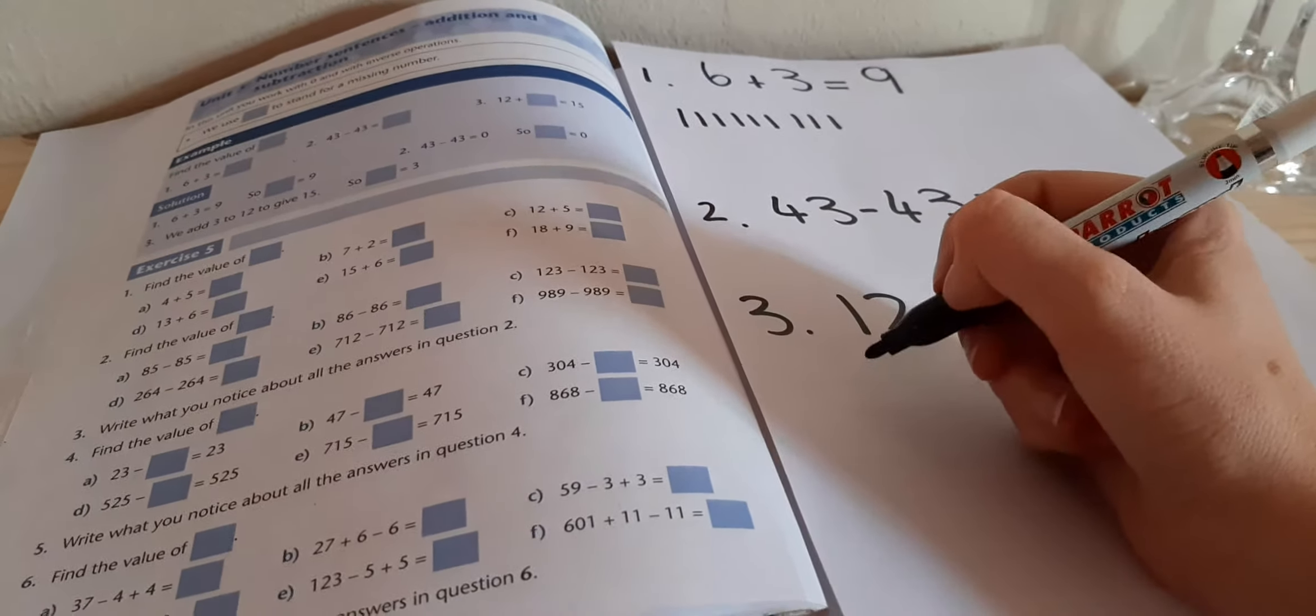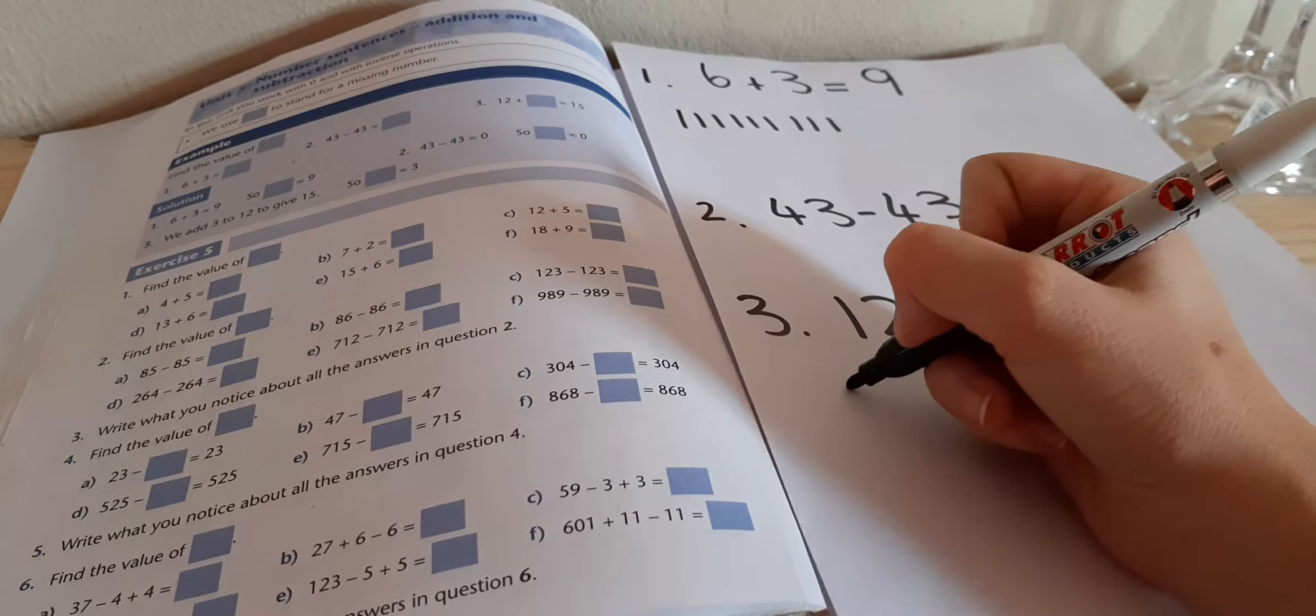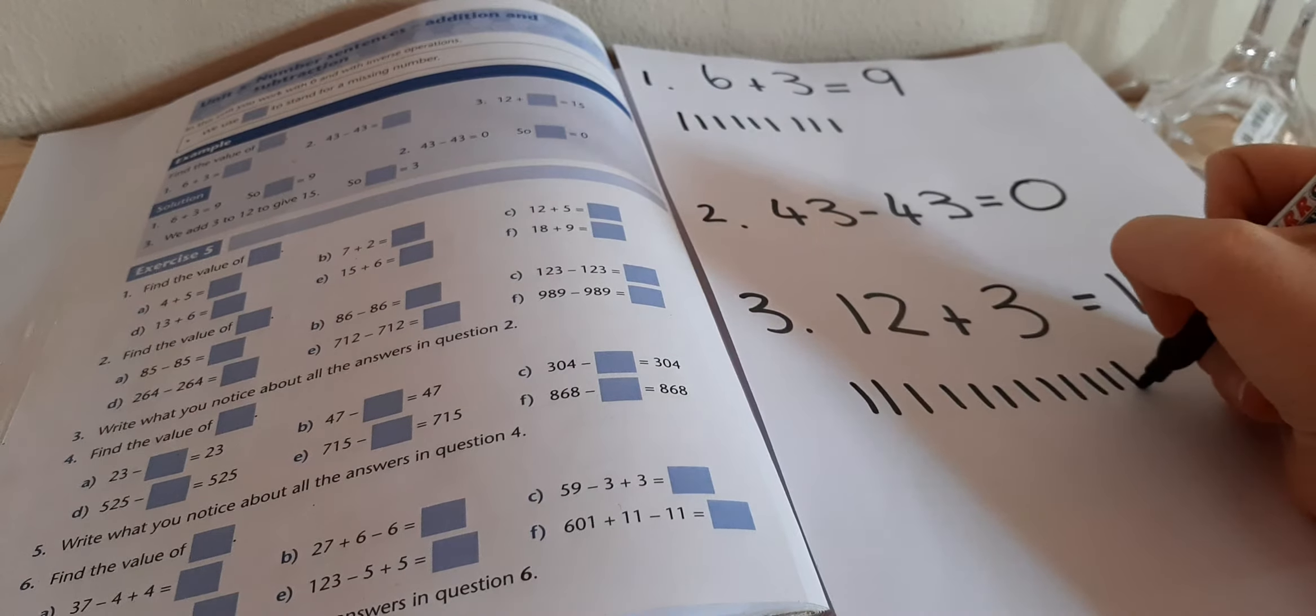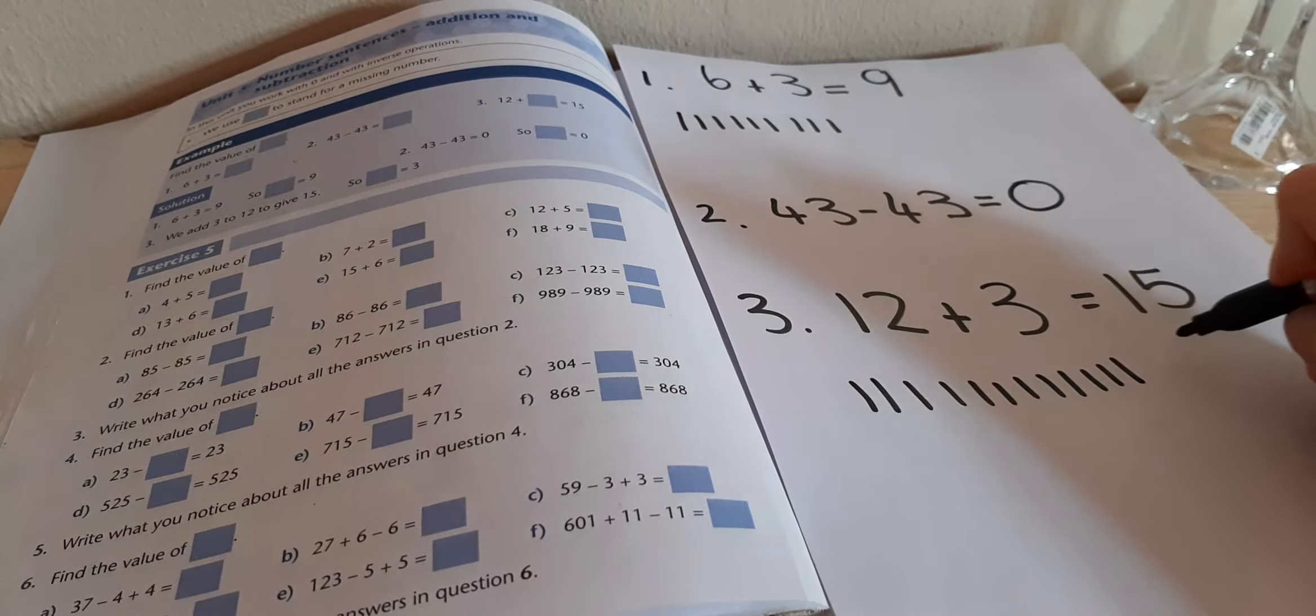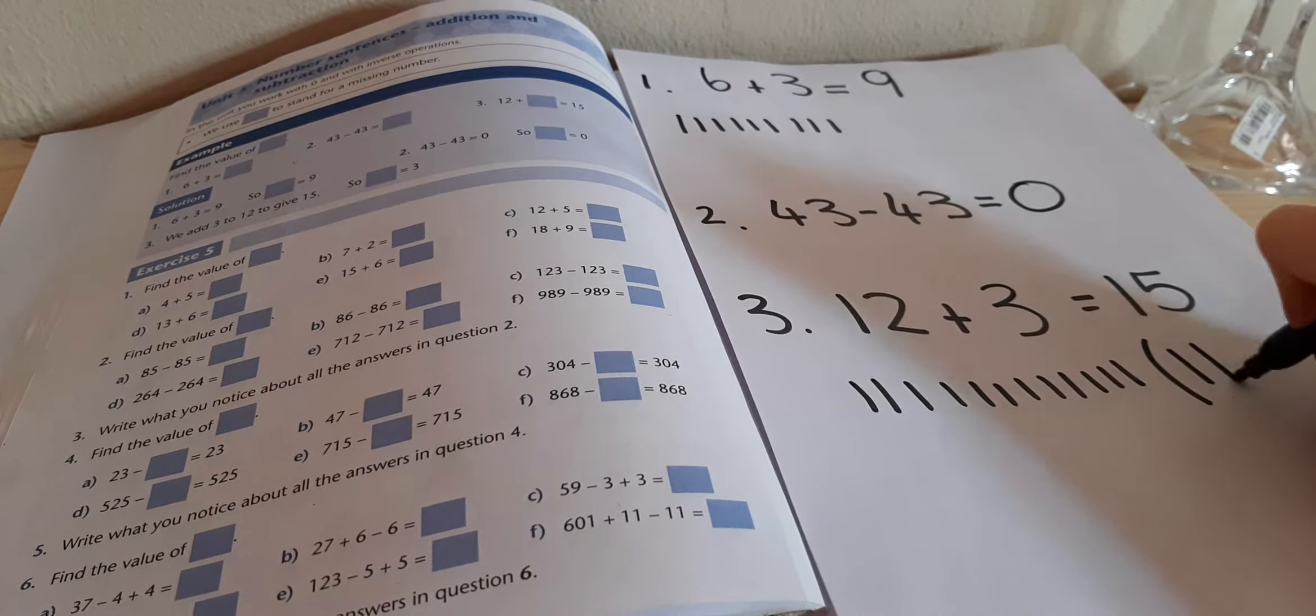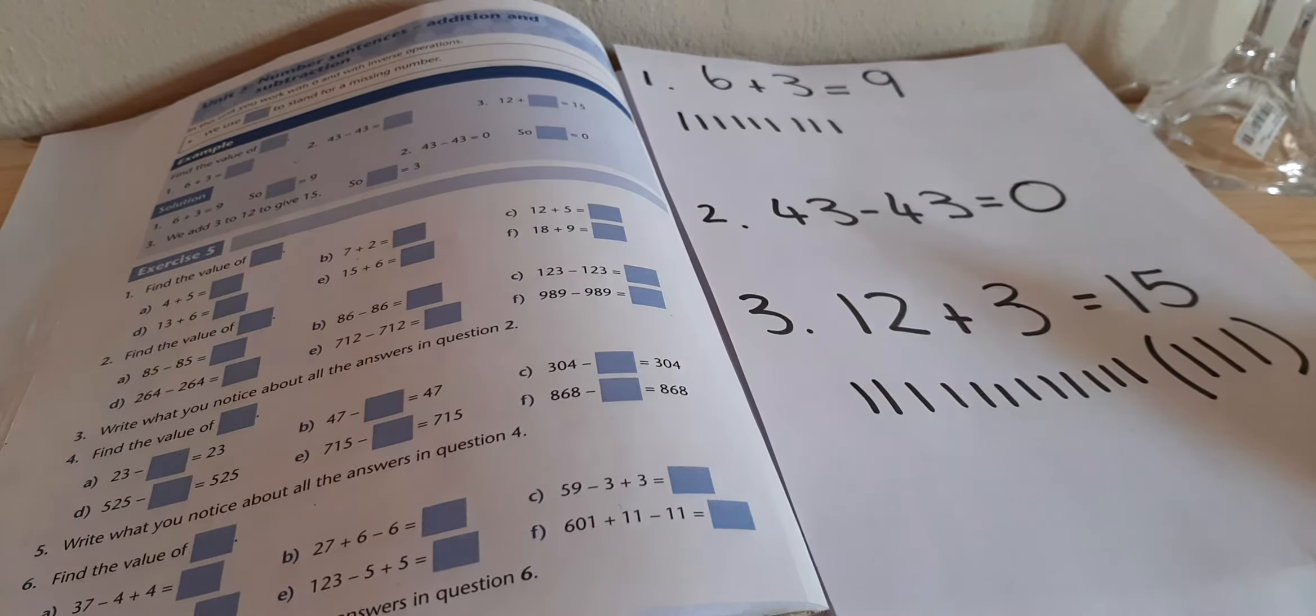Or you can draw 12 sticks. 1, 2, 3, 4, 5, 6, 7, 8, 9, 10, 11, 12. And now I want to get to 15. So I know everything from here, 12, 13, 14, 15. So everything there is what I've added on. I've got 3 sticks.